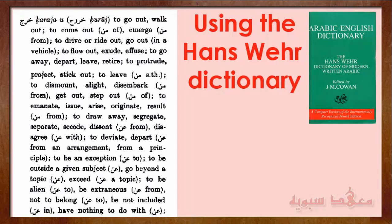One of the verbs mentioned in Book One of the Medina books is خرج. Now خرج can have a number of meanings. We have خرج as the past tense verb, and the present tense or مضارع is يخرج, indicated by this 'u'. The مصدر, or verbal noun, is خُرُوج, and its main meaning is to go out, to walk out, or to come out.